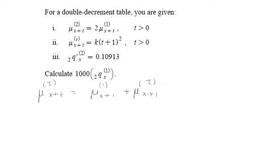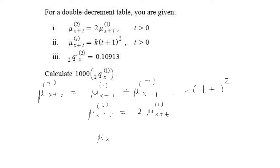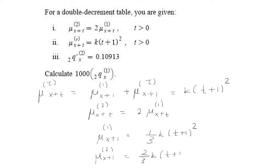From the second bullet point, the total force of mortality is k times the quantity (t+1) squared. From the first bullet point, the force of mortality of the second decrement is twice the force of mortality of the first decrement. Substituting back in, the force of mortality of the first decrement is (1/3)k(t+1)², and the force of mortality for the second decrement is (2/3)k(t+1)².